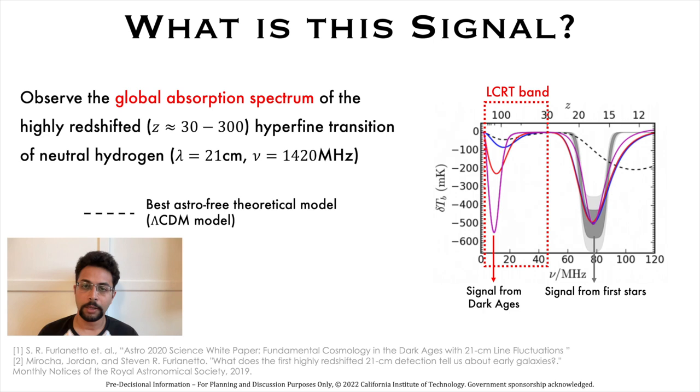LCRT will observe the global absorption spectrum of the highly redshifted 21cm neutral hydrogen line. The image on the right shows our best understanding of the 21cm line as a function of cosmological redshift of frequency. Going towards the left on this plot means going further back in time.